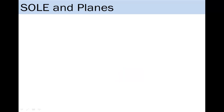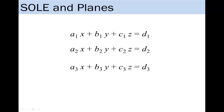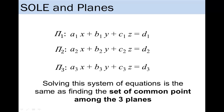To begin, let us consider a system of three linear equations with three unknowns. Notice that each equation resembles the equation of a plane in Cartesian form. The system of three linear equations can be interpreted as the Cartesian equation of three planes. Solving this system of equations is the same as finding the set of common points among the three planes.